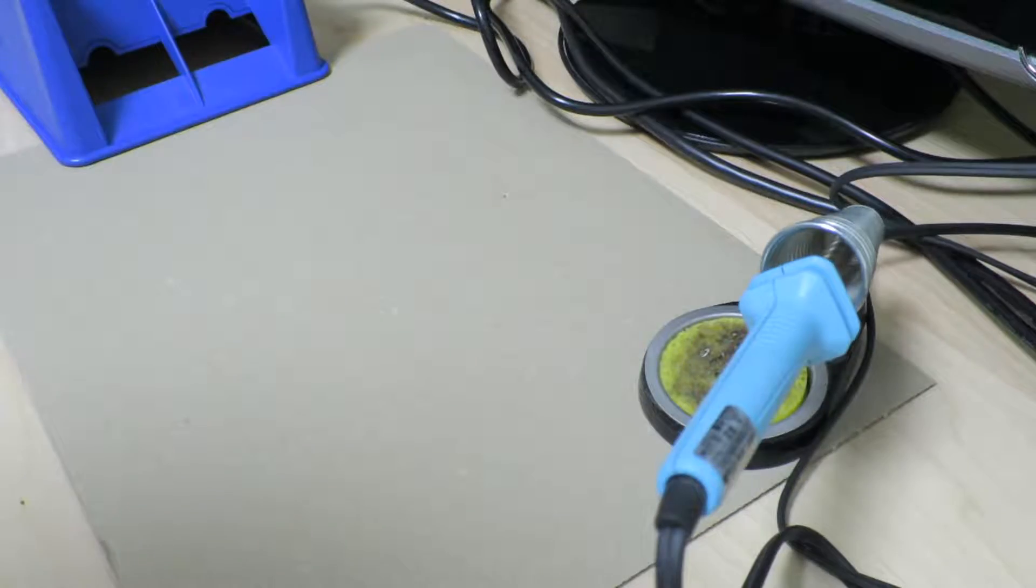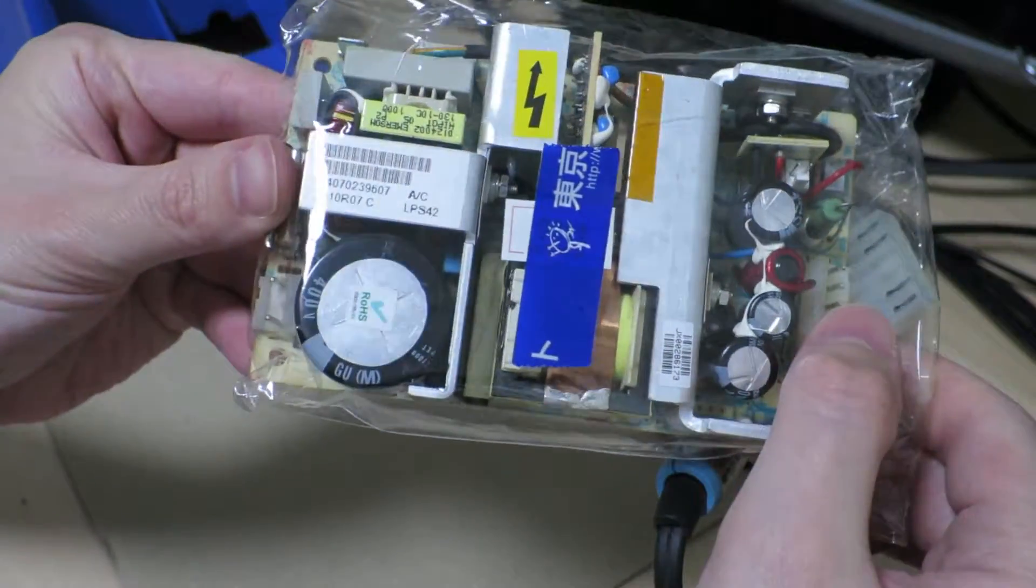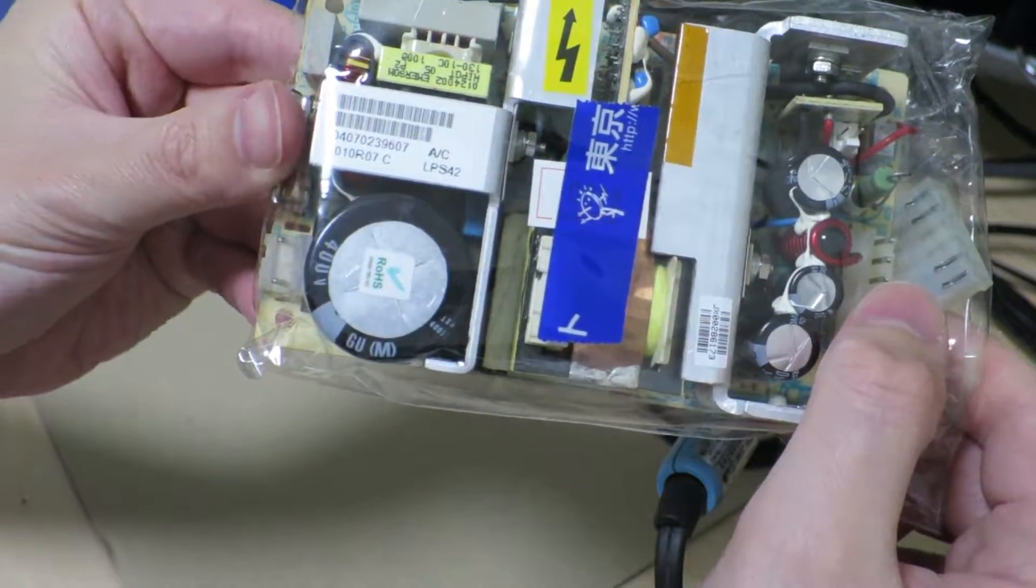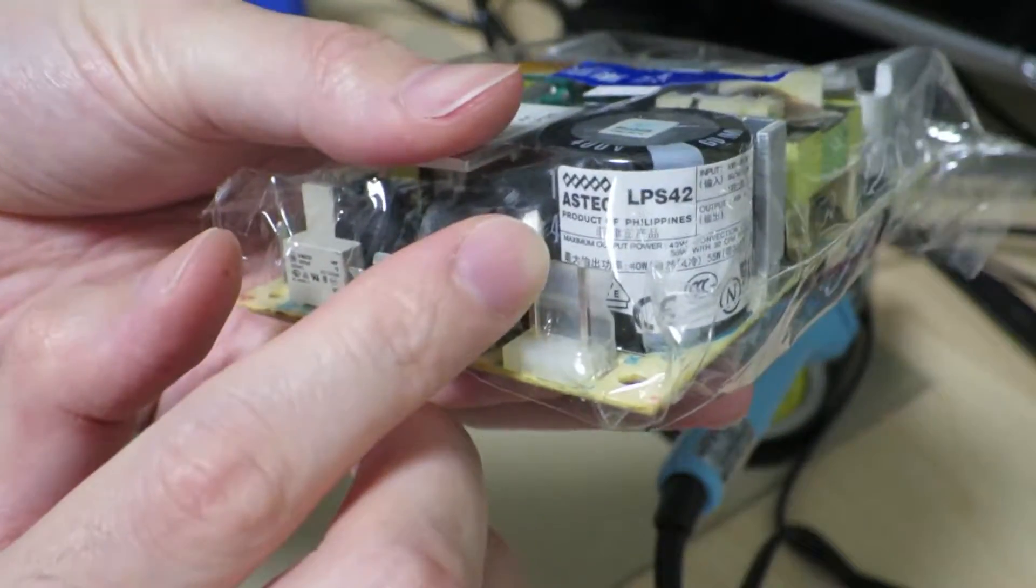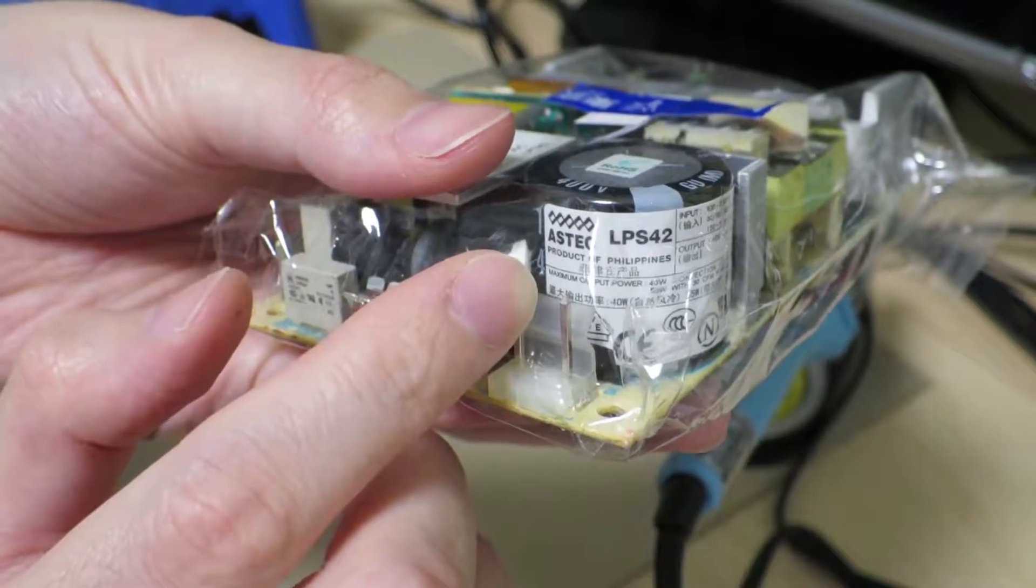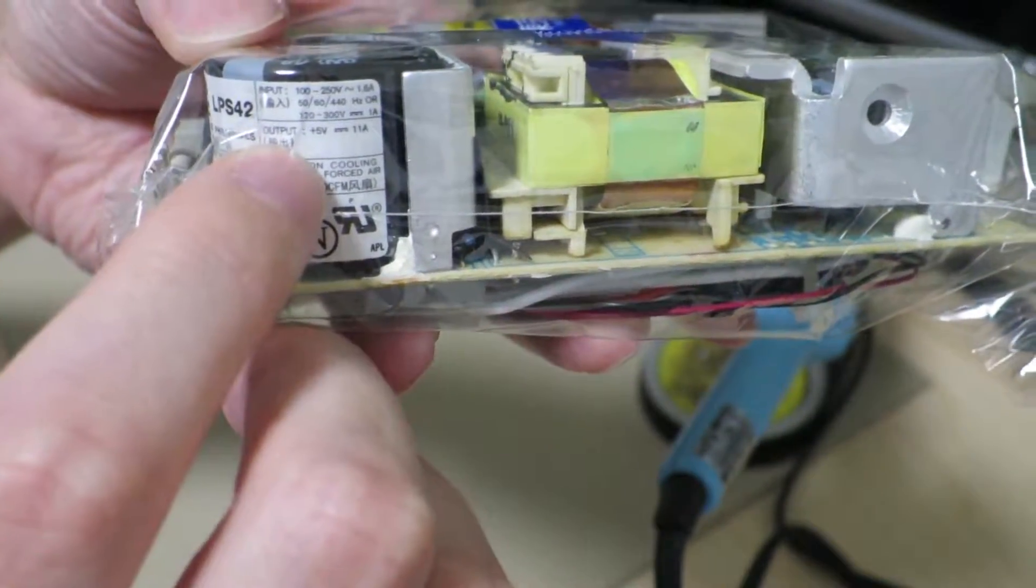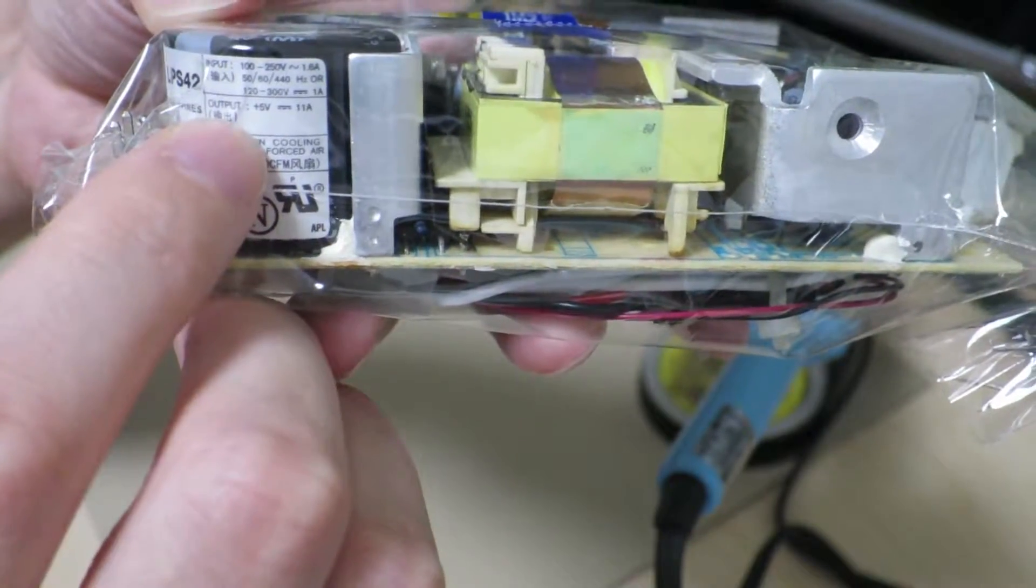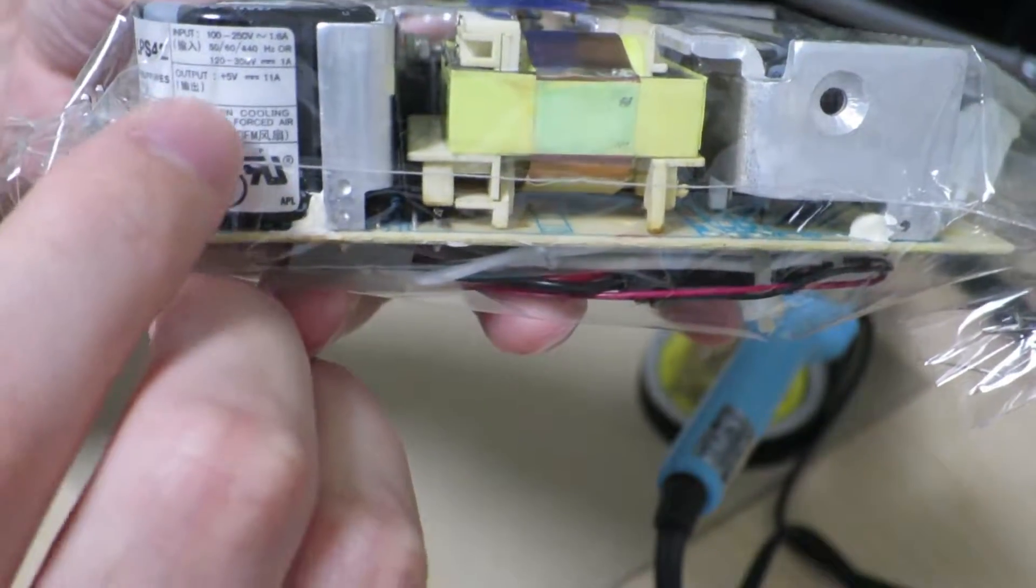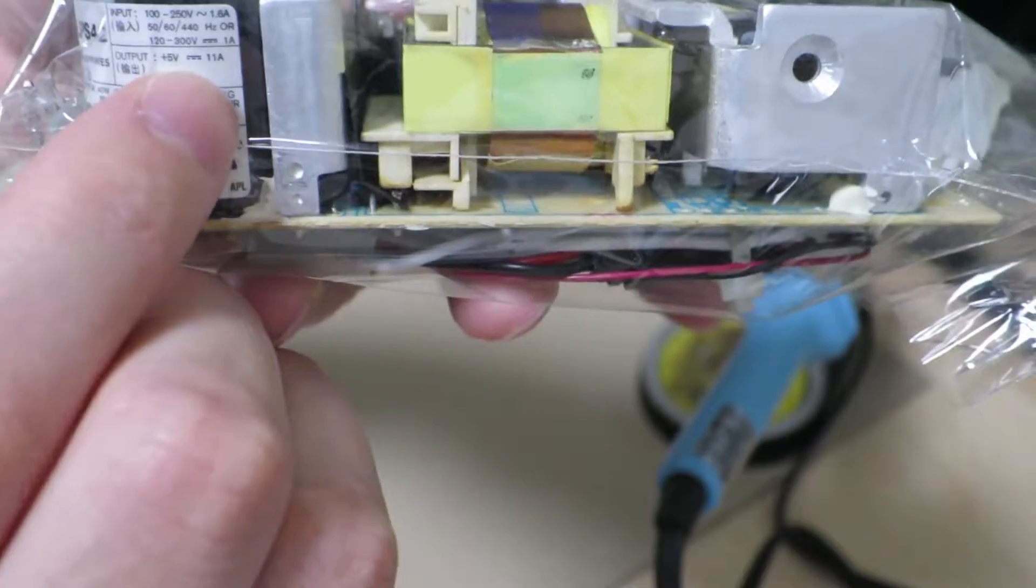Hi there, so today what we're gonna do is, I have this power supply which is an Aztec LPS42, it's an AC input DC output power supply. It's 5 volts at 11 amps.